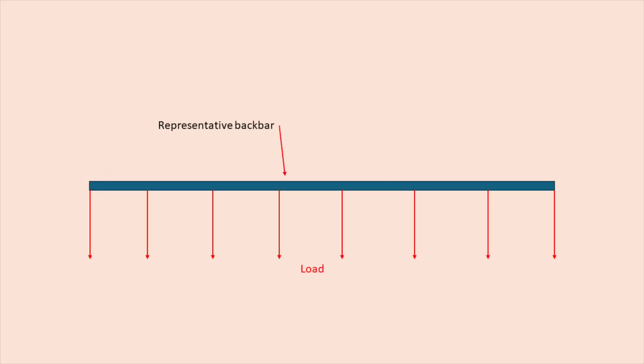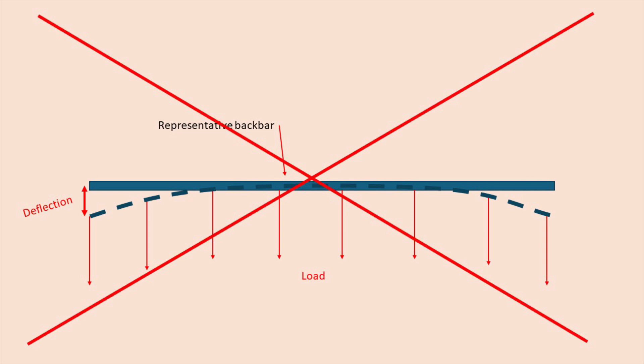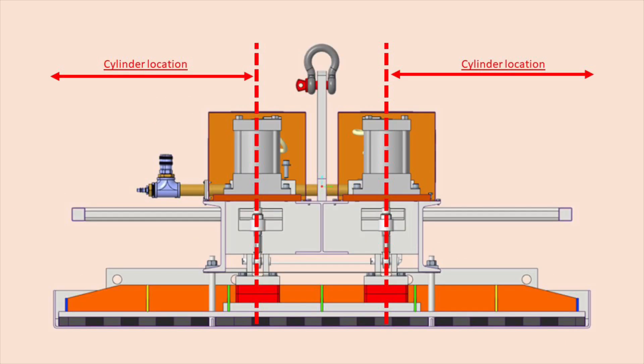If the machine was simply extended, lifting a heavier load would lead to excess bending of the back bar and cause an uneven lift which could lead to catastrophic failure. The same goes for the pneumatic cylinder placement which needed to be optimized to provide an even lift.